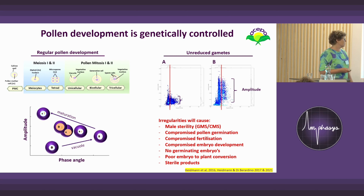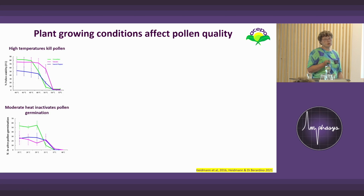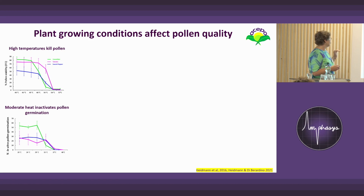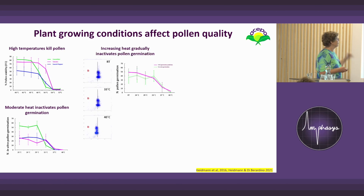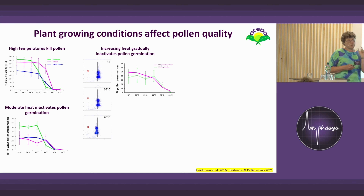You can select against this simply by measuring the pollen. Regarding growing conditions, we know that high temperatures kill pollen and moderate heat inactivates pollen germination, and that goes in a gradual way — as you increase temperature step by step, pollen germination goes down. You can follow it by measurement. What actually happens is that the pollen tube gets shorter, so it may reach the first ovules but will not grow further into the style.